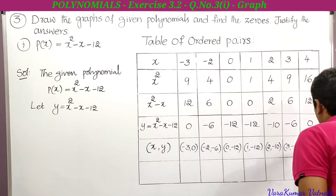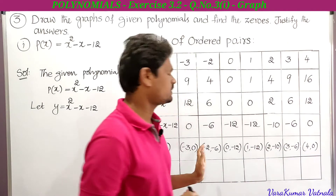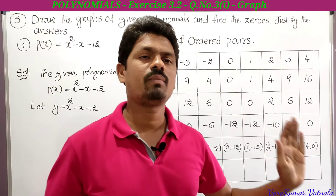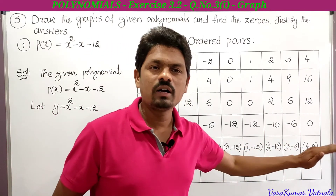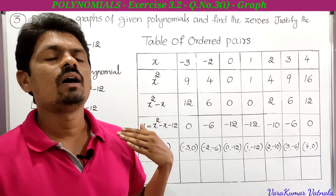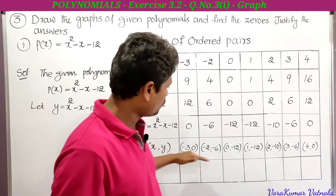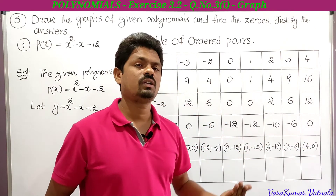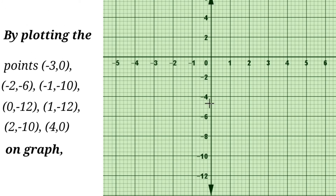These are the ordered pairs of the given quadratic polynomial y = x² - x - 12: (-3, 0), (-2, -6), (-1, -10), (0, -12), (1, -12), (2, -10), (3, -6), (4, 0). By plotting these ordered pairs on a graph sheet we can get a curve. Before plotting, we must decide the scale. On the x-axis, take 1 cm = 1 unit; on the y-axis, take 1 cm = 2 units.